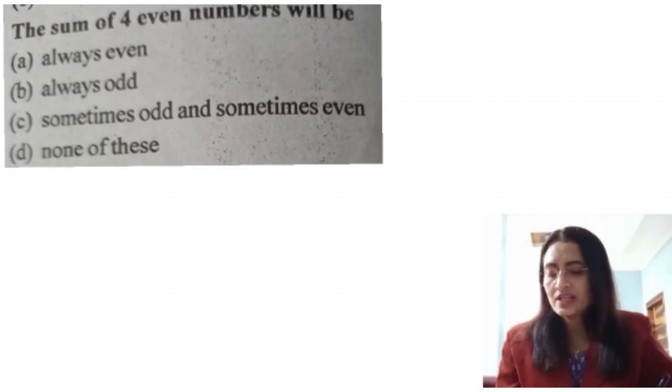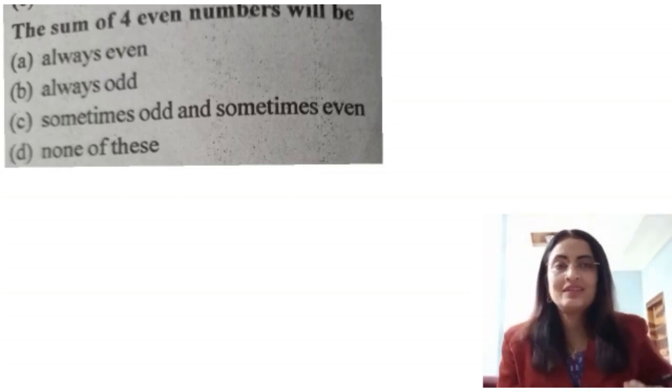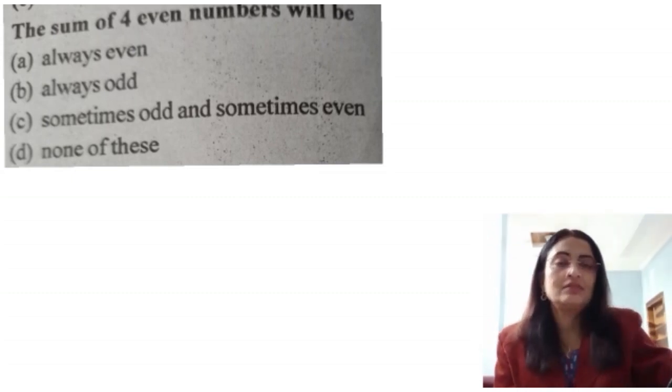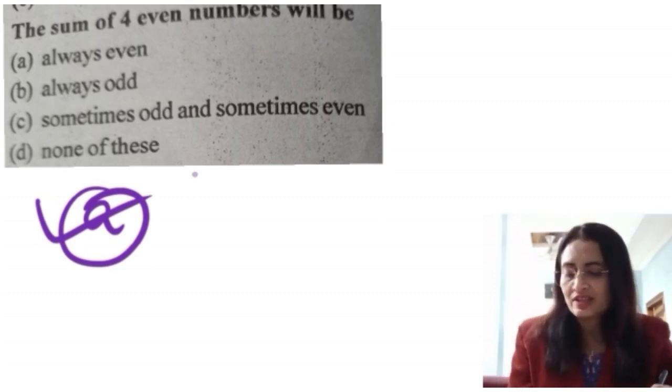Next question: the sum of four even numbers will be — options are always even, always odd, sometimes odd and sometimes even, and none of these. This is an obvious thing: if we add all even numbers, the answer will also be even. So option A, always even, is the correct answer.